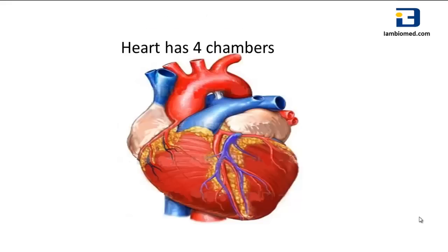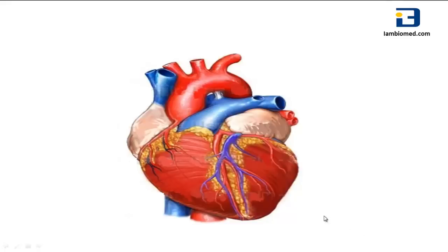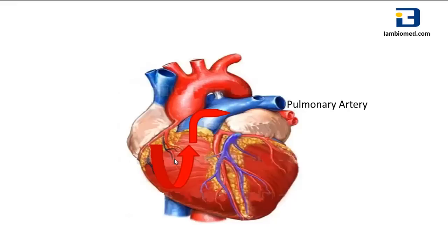The human heart is made up of four chambers: the right atrium, the right ventricle, the left atrium, and the left ventricle. The right side of the heart receives the deoxygenated blood from the veins, and from there it pumps the blood through the pulmonary arteries into the lungs.